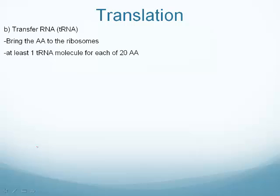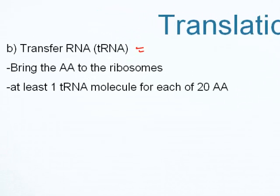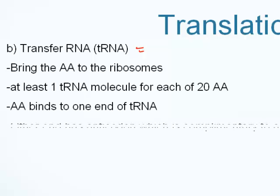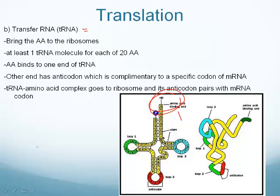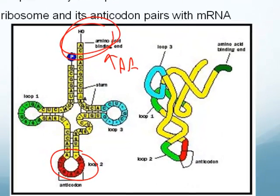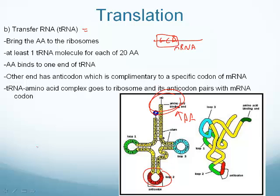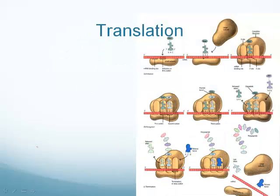So what does tRNA do? mRNA takes the DNA message to the ribosome. Once it gets there, tRNA comes into play. The tRNA molecule has a complicated structure, but there are two main things we care about: one end holds the amino acid, and the other end has the anticodon. A codon is on the mRNA strand — three letters together. The tRNA comes in and its anticodon looks for the complementary letters on the mRNA codon. So the amino acid binds to one end, the anticodon is on the other, and it binds to a specific codon of the mRNA.